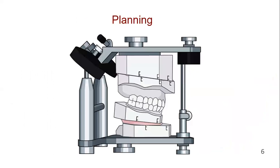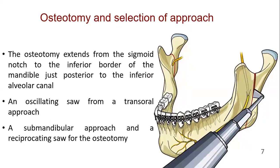Do proper planning for the orthognathic surgery. The osteotomy extends from the sigmoid notch to the inferior border of the mandible, just posterior to the inferior alveolar canal. The osteotomy is usually performed using an oscillating saw from a transoral approach, as shown in this figure.